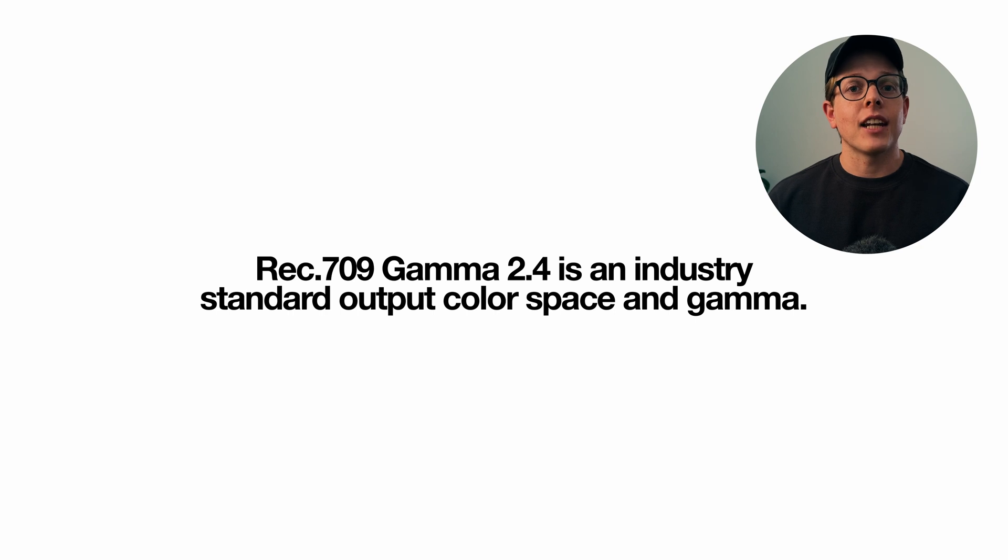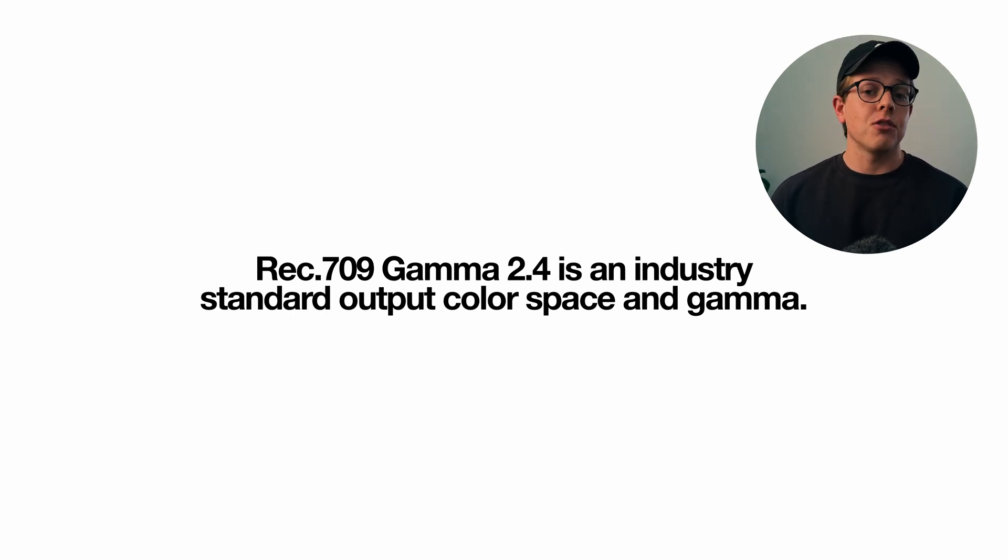That's why it's so important to understand color management — because color management is being able to manage all of these color spaces and output them to the desired color space, which in most instances is Rec709 Gamma 2.4. Something you should remember — if you've been around you will definitely have heard that quite a lot. Rec709 Gamma 2.4 is an industry standard used pretty much across the entire industry. If everyone was delivering at a different output color space things would be super messy.